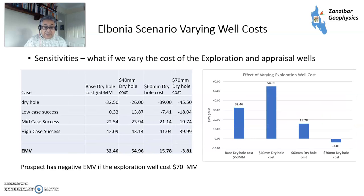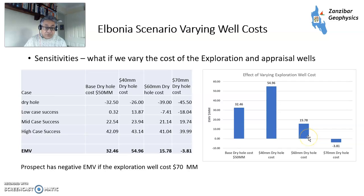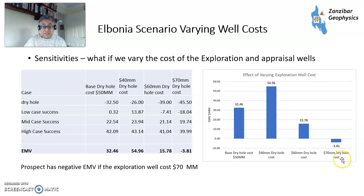If you vary the well costs: with a dry hole cost of $50 million you get an EMV of $32 million. If you can reduce the cost of your exploration well to test the prospect more cheaply, you get a significant increase in EMV. If the exploration well is more expensive — either because rig costs go up or because you gather extra data — you have a higher cost. At $70 million for the exploration well, which is high but not unknown, you will have a negative EMV, because it will cost you more to test it on the balance of probabilities than it's worth.